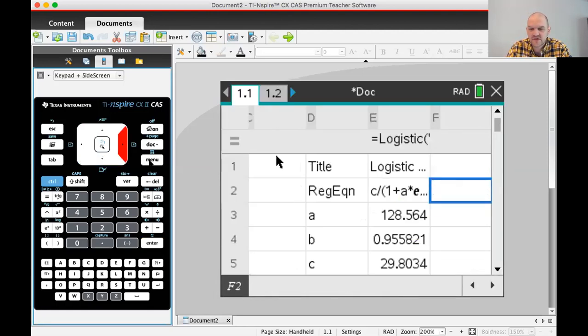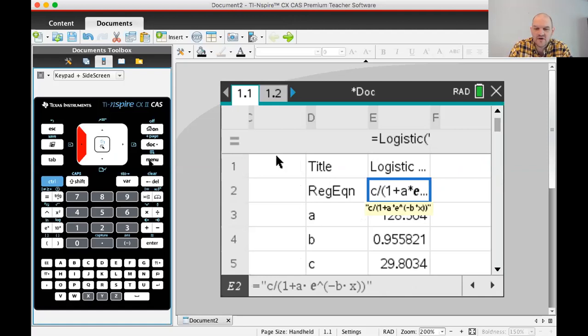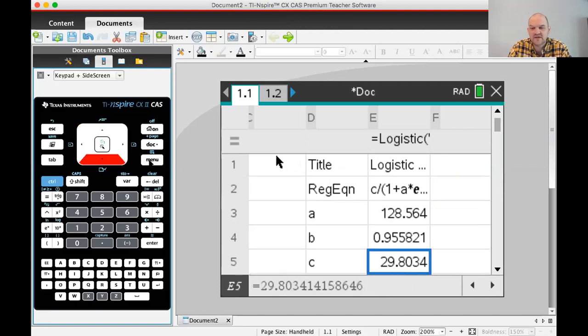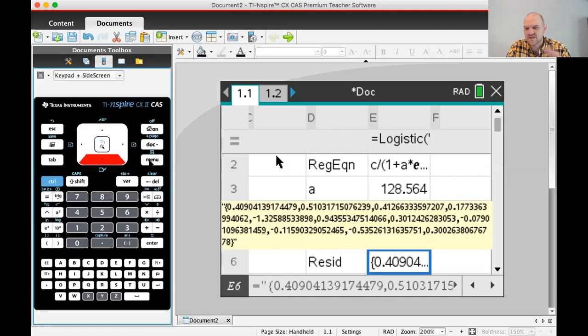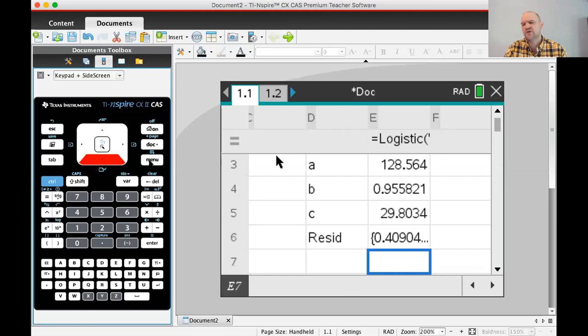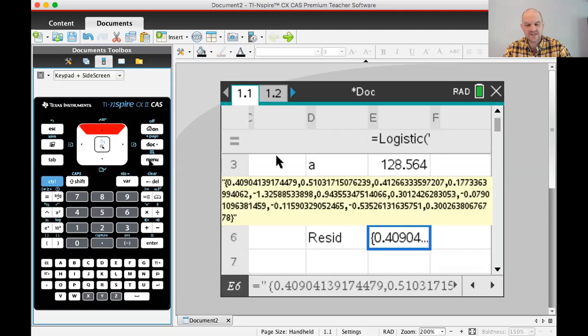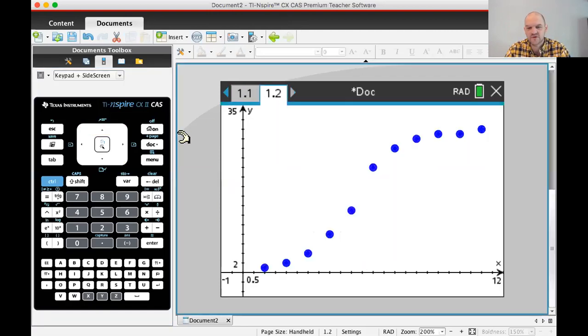And you can see it spits it out. It tells you what the function looks like. So the function that it's generating looks like C over 1 plus AE to the negative BX. That's what it's dealing with. And then it tells you what A, B, and C are. And then it gives you your residuals, which is how different a data point is from the curve's point. But we don't really need to talk about that here. If you're in AP stat or any statistics, you've probably talked about that.